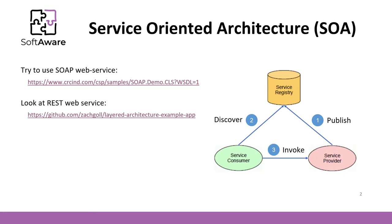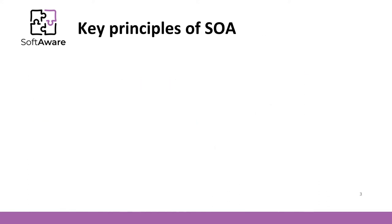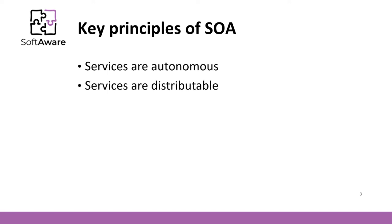Let's review the key principles of a service-oriented architecture approach. Services are autonomous — each service is maintained, developed, deployed and versioned independently. Services are distributable — services can be located anywhere on a network, locally or remotely, as long as the network supports the required communication protocols. Services are loosely coupled — each service is independent of others and can be replaced or updated without breaking the application that uses it, as long as the interface is still compatible.